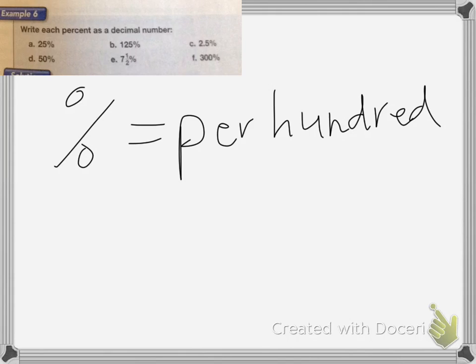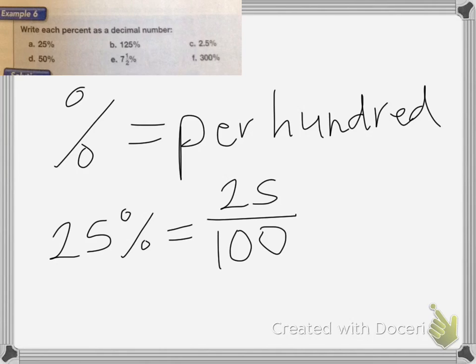Now we're going to do writing percents as decimal numbers. Remember, percent means per hundred. So if I have 25% per hundred, that means it's going to be 25 per, which is my division line, hundred, which I would reduce down to 1 fourth.